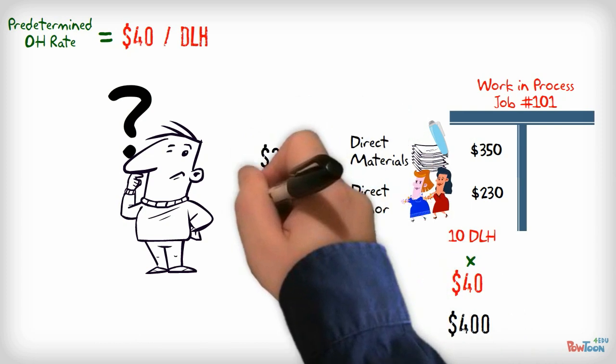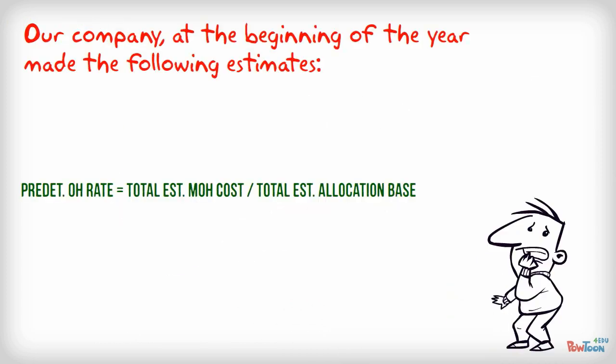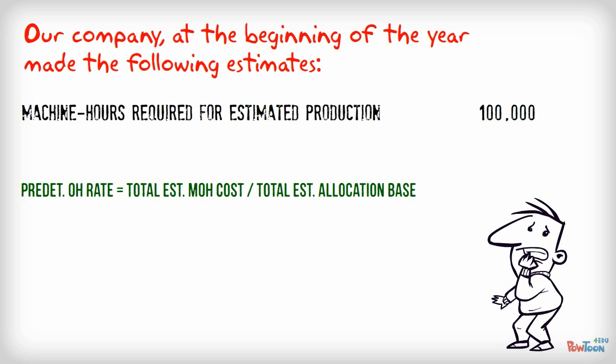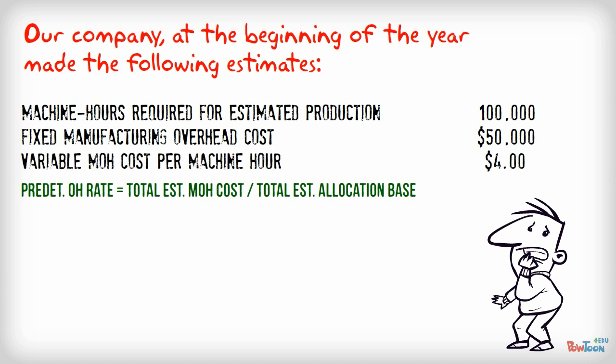Now let's take a look at a more complicated example. Instead of having the total manufacturing overhead cost, we have to calculate it. It is very simple, just use the cost formula. Our accountants estimated that we will need 100,000 machine hours for the estimated production. We will have $50,000 of fixed costs and the variable cost per machine hour is estimated to be $4 per machine hour. Just put these into the cost formula.